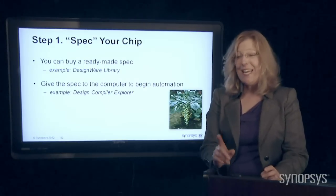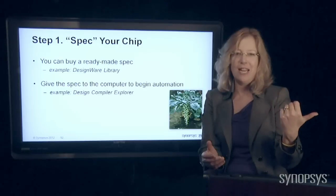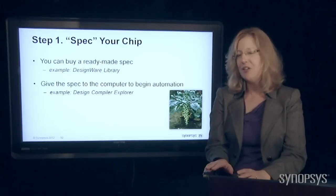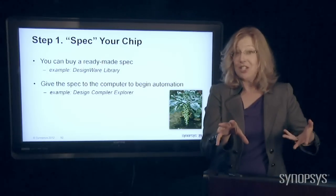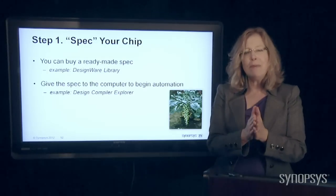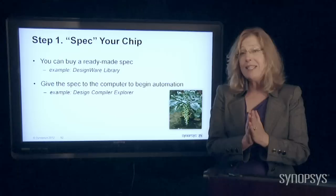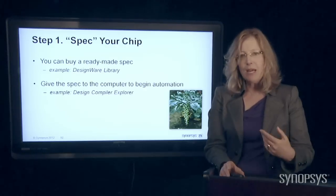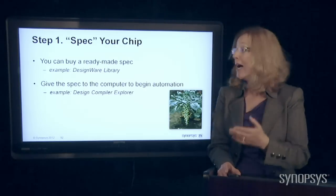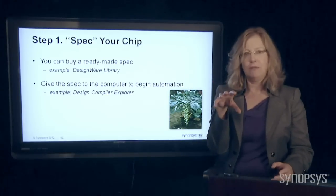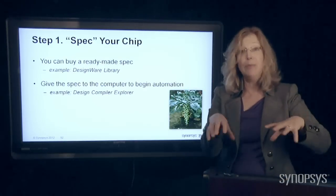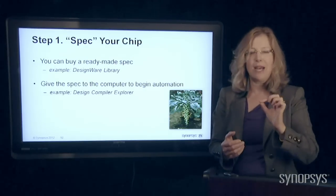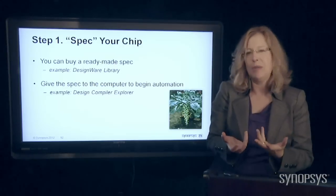Instead of writing the specification yourself, let's say your engineer neighbor has already written the specification for the most awesome cell phone ringer — you can go buy that and don't have to create it yourself. You can use that in your next generation cell phone. We call these ready-made specifications IP — intellectual property — because they're little ideas you can buy from other people. For example, Synopsys sells what's called the Designware Library, a collection of little specifications you can purchase and put together like building blocks to build something bigger and better.